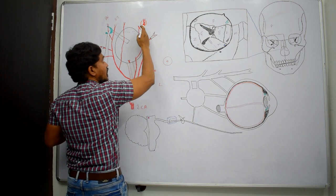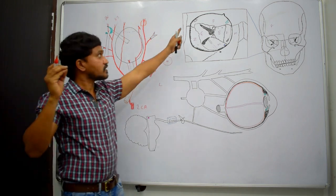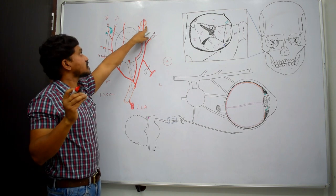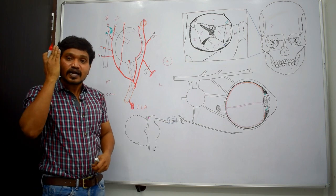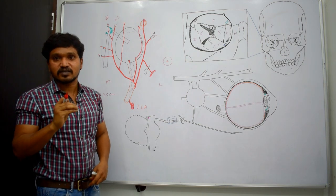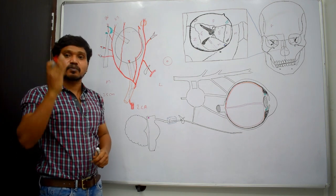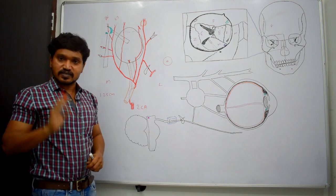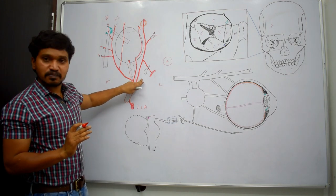It runs forward and reaches the anterolateral part of the orbit, where it supplies the lacrimal gland. It also supplies the lateral part of the palpebrae — that means the lateral part of the eyelids — by giving lateral palpebral arteries. That is the course of the lacrimal artery.